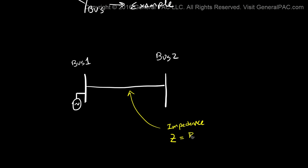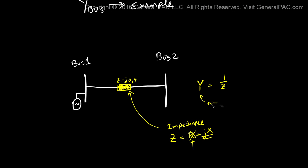Impedance has a resistive component and a reactance component. We're going to model this impedance by a square box. Let's say that Z is equal to j0.4 — there's no resistive component here, it's all reactive. The admittance of this transmission line equals Y, and Y equals 1 over Z. That equals 1 over j0.4, which calculates to negative j2.5.